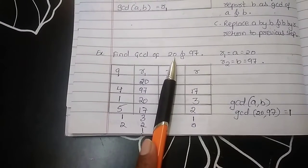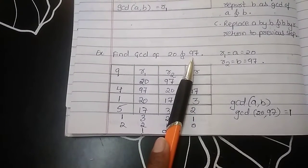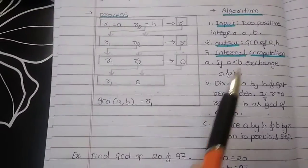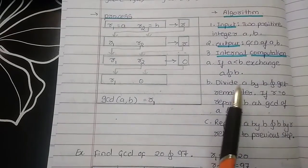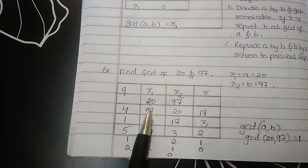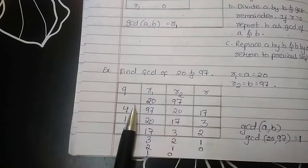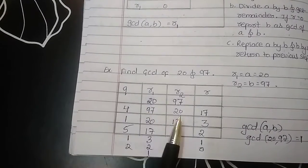Here, remember the value of A is R1 and value of B is R2. So, according to the algorithm, if the value of A is less than B, we should exchange the value of A and B. Since 20 is less than 97, we are going to exchange it. So, I am writing 97 and 20.